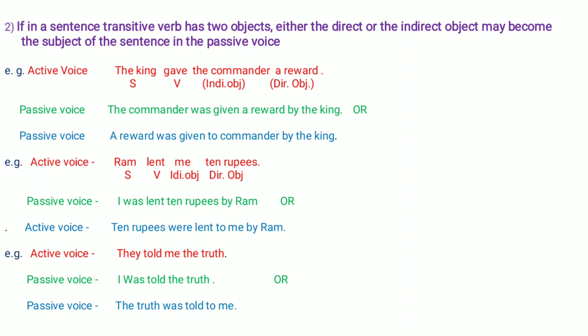Another example: 'Ram lent me 10 rupees.' What did Ram lend? '10 rupees' — so '10 rupees' is the direct object. To whom? 'To me' — so 'me' is the indirect object. Taking indirect object first: 'I was lent 10 rupees by Ram.' Taking direct object as subject: '10 rupees were lent to me by Ram.'